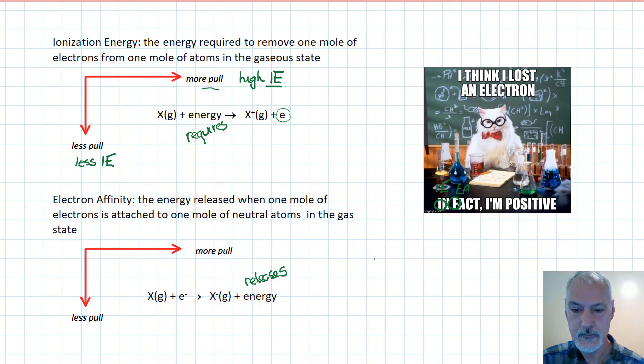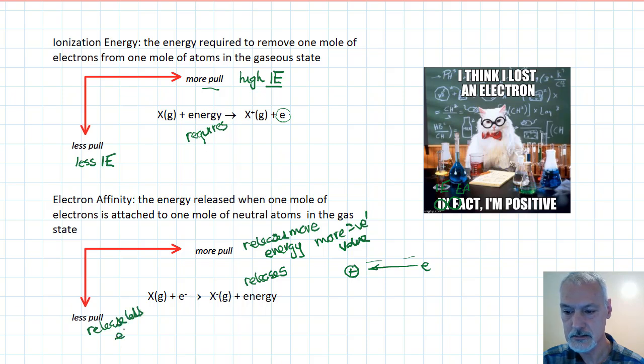As we move across, more pull. So what that means in the case of our atom, with our electron way out there that's coming in, it's going to be pulled in and it's going to fall further into the nucleus. More pull releases more energy. And that will mean that you're going to get a bigger negative value, a more negative value. Conversely, where we have less pull, we're going to release less energy. And that release of less energy means your value is going to be less negative.